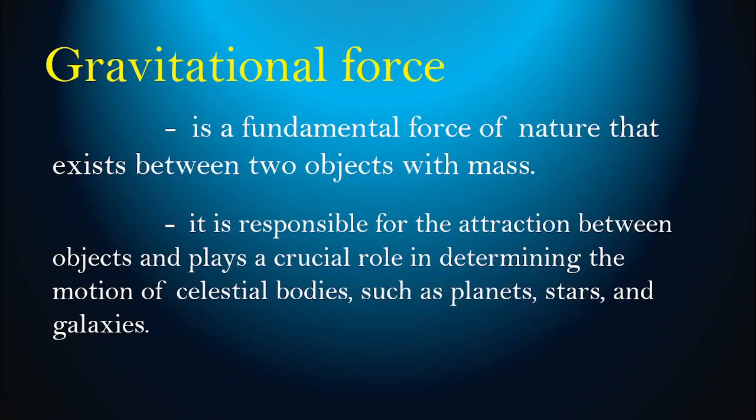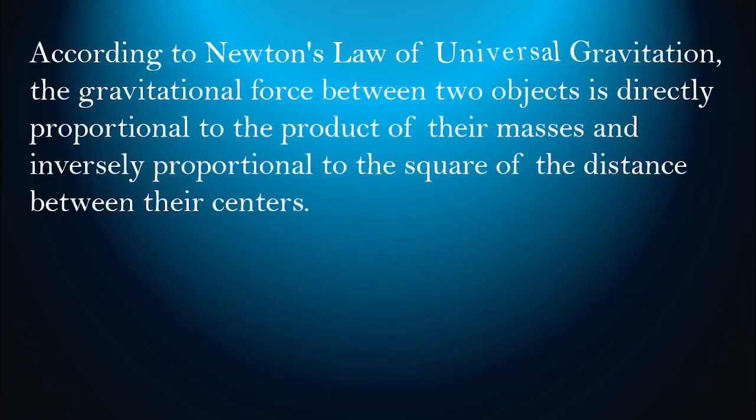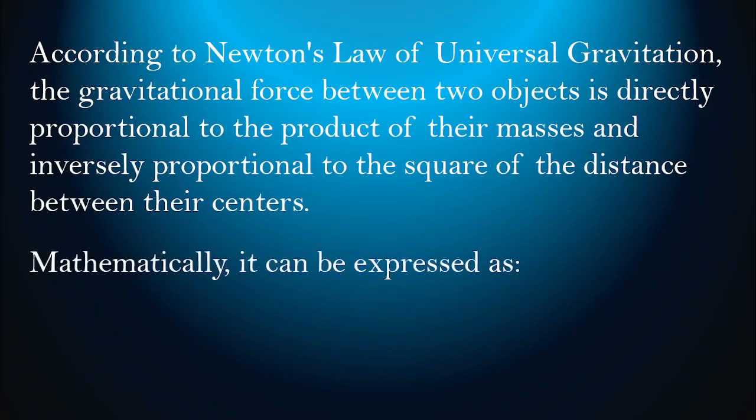According to Newton's law of universal gravitation, the gravitational force between two objects is directly proportional to the product of their masses and inversely proportional to the square of the distance between their centers.